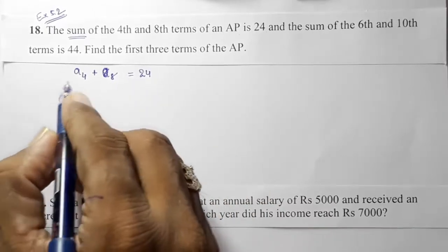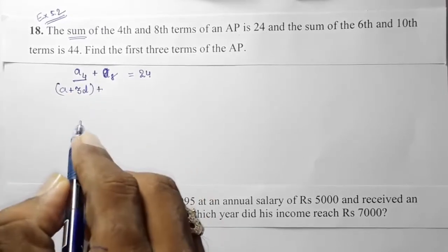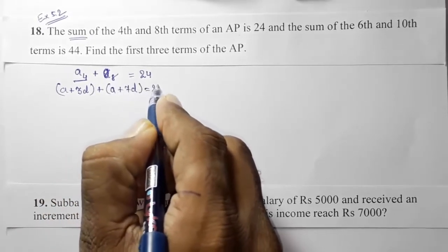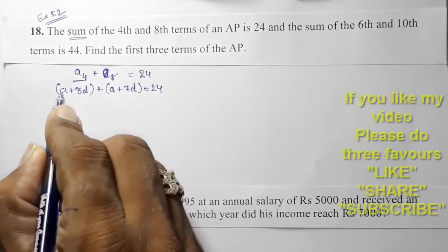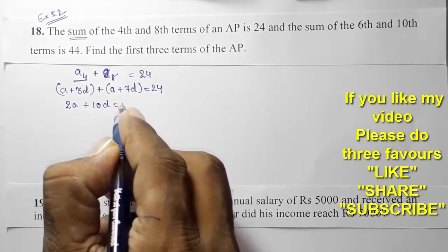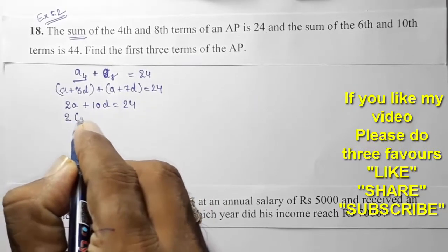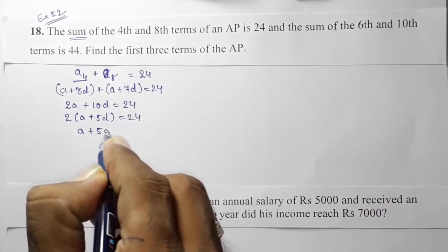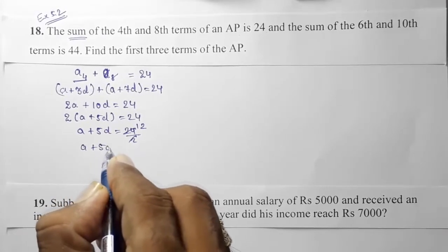So from this we are going to find one equation. a4 means a plus 3d, and a8 means a plus 7d, and their sum equals 24. Opening the bracket, the plus sign means no sign change. We add: a + a = 2a, and 3d + 7d = 10d, so 2a + 10d = 24. Taking 2 as common, we get a + 5d = 12. So the first equation is a + 5d = 12.